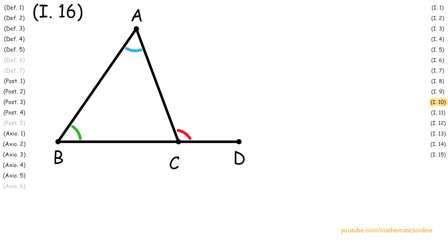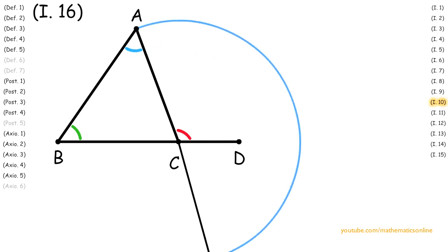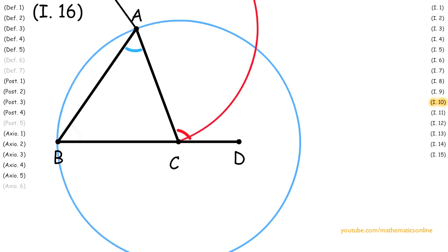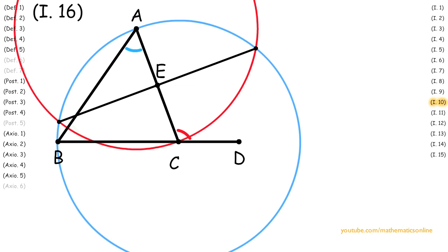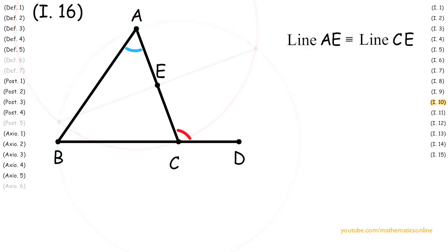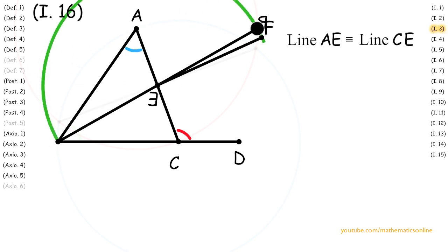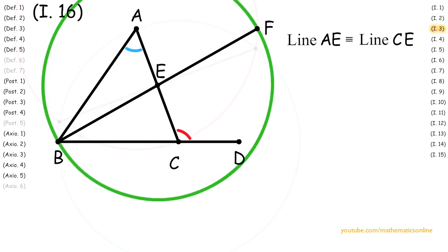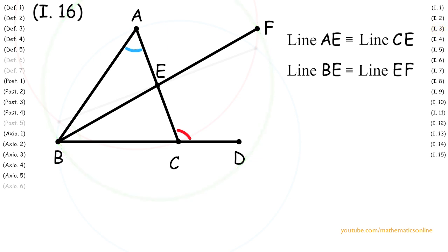First, with line AC we apply Proposition 10 to bisect it into two congruent lines. Therefore line AE is congruent to line CE. Next, with Postulate 1 we create line BE, and with Postulate 2 we extend it to an arbitrary point F. With line BF and line BE we apply Proposition 3 so that line BE is congruent to line EF.